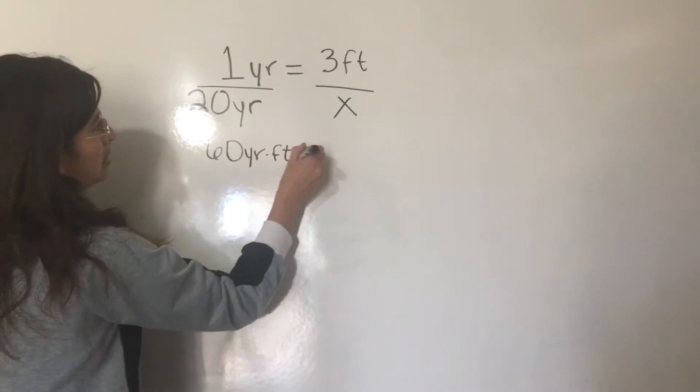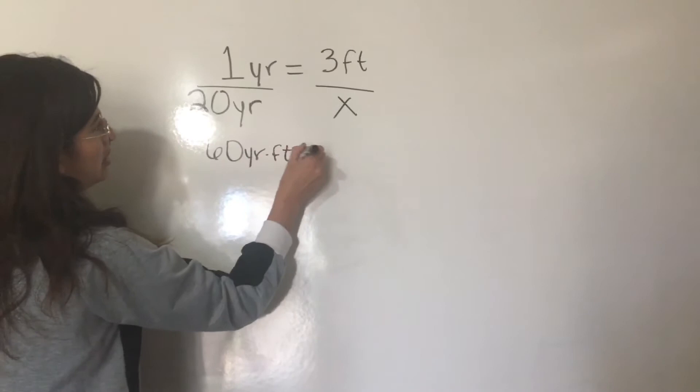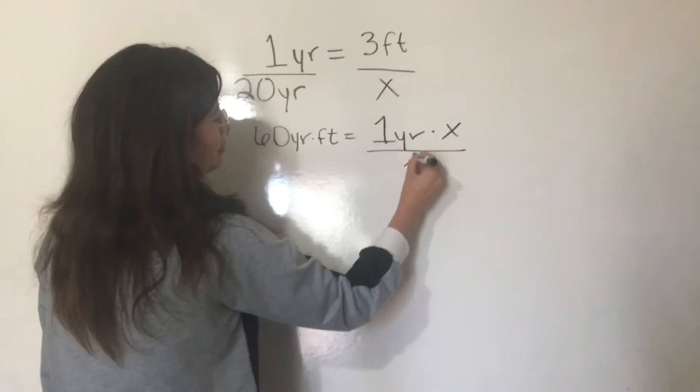60 yards times feet equals one yard times X. You divide by your one yard. And your yards cancel out.